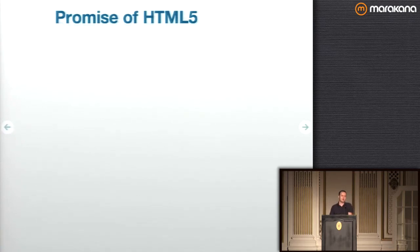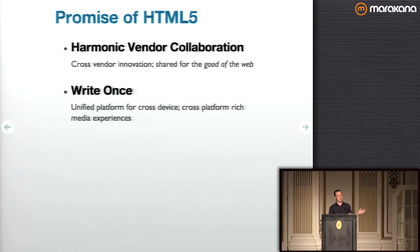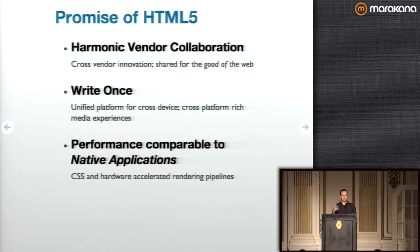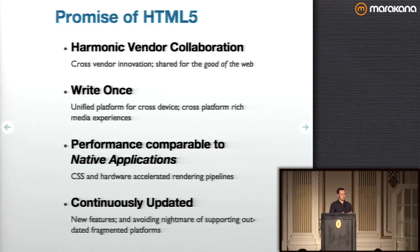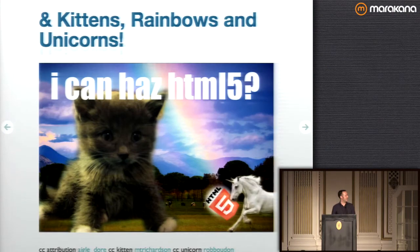We've heard a lot today about the promises of HTML5 from many different speakers. We had this idea of harmonic vendor collaboration, cross-vendor sharing and the spec process. This idea of write once and have it work in multiple places — sort of the ideal of Java from the late 90s being actualized with multi-vendor participation. We had the idea of performant applications where HTML5 would render experiences comparable to native apps through CSS animation, WebGL, and accelerated canvas. And we had this idea that the platform would be updated because all these devices are connected to the network.